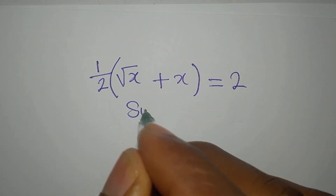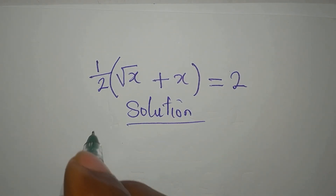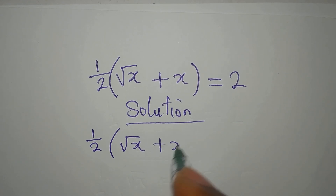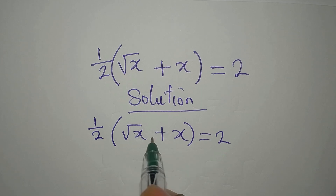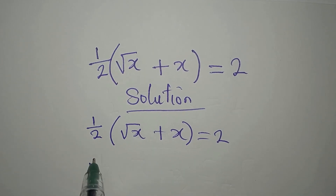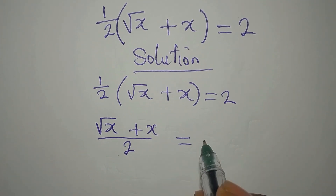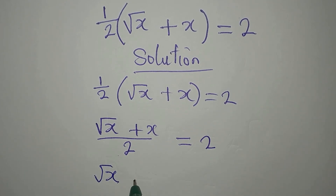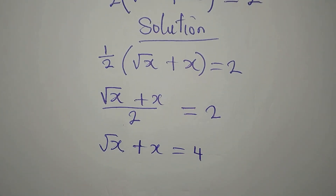Hello everyone, let's provide the solution to this problem: 1 over 2, open bracket, root x plus x equals 2. Now, this can be written as (root x plus x) all over 2 equals 2. That means we can multiply, so we have root x plus x equals 4.